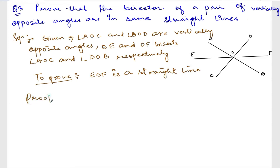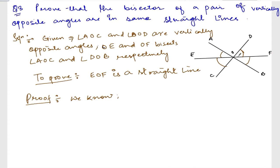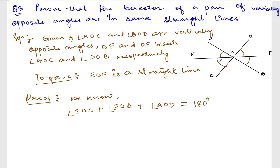So let us start our proof. First of all, we know that OE and OF are bisectors, so the half-angles are equal on each side. We know that angle EOC plus angle EOA plus angle AOD is equal to 180 degrees. This is equation 1.